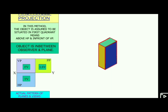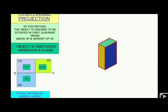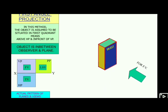Orthographic projection gives us multiple views — the front view, side views, and top view. We define the front view direction as F. Once we define the front view direction, the other views are determined automatically.